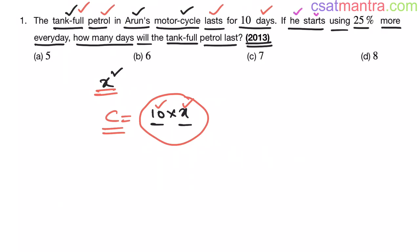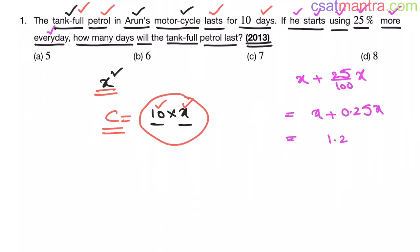Now he starts using 25% more every day. Earlier he was using x liters every day. Now 25% more means x plus 25/100 into x, which is x plus 0.25x, which is equal to 1.25x.